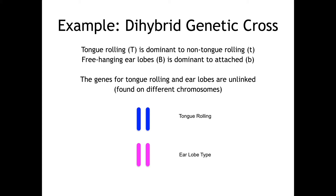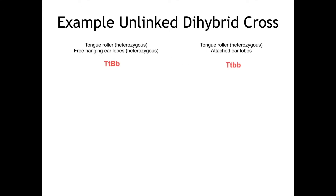Therefore, they are found on different chromosomes, as illustrated by the image at the bottom. We will do a cross with one parent who is a tongue roller, heterozygous for that — so that's uppercase T, lowercase T. And they have free hanging earlobes, also heterozygous for that — uppercase B, lowercase B.